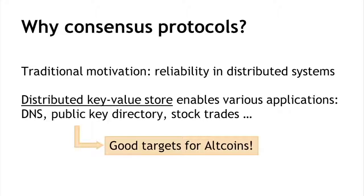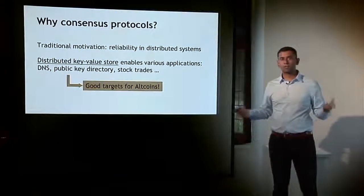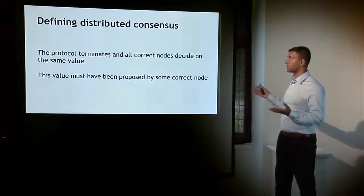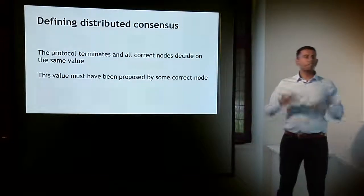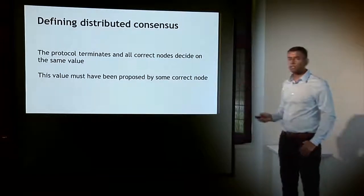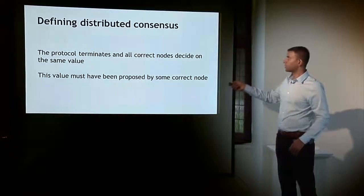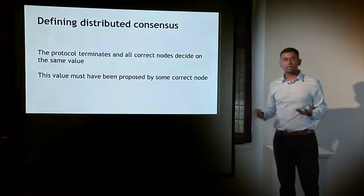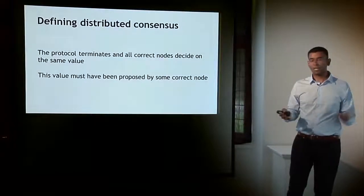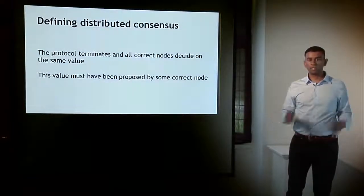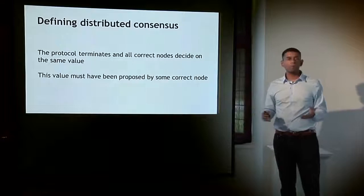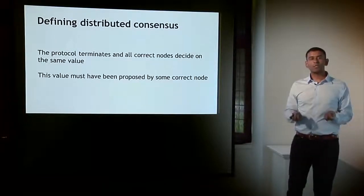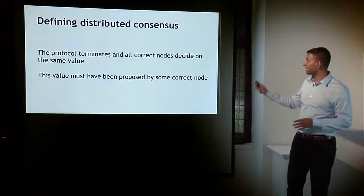The technical definition of distributed consensus is quite simple. Imagine a fixed number n of nodes or processes, each with some input value. A consensus protocol happens, and the two requirements are: first, the protocol should terminate and all correct nodes should decide on some consensus value — I say correct nodes because some may be faulty or even outright malicious. Second, this agreed-upon value cannot be arbitrary; it should be a value that was proposed as input by at least one of these correct nodes.